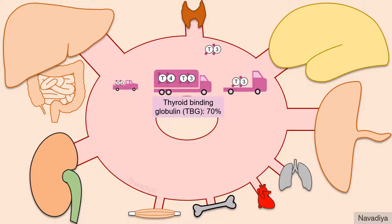Among plasma proteins, thyroid binding globulin is the major one. 70% of circulating thyroid hormones bind with thyroid binding globulin, about 20% with albumin, and about 10% with transthyretin.